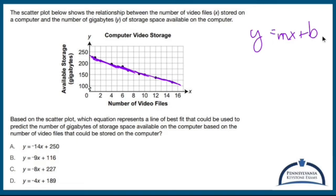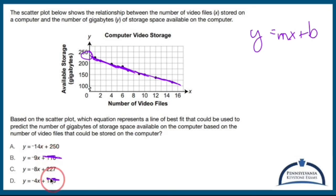All of these slopes are negative — that's not going to help narrow things down much. What I do see is that b, the y-intercept, is somewhere up here in the 200s, so that rules out some answer choices. Definitely not those two.